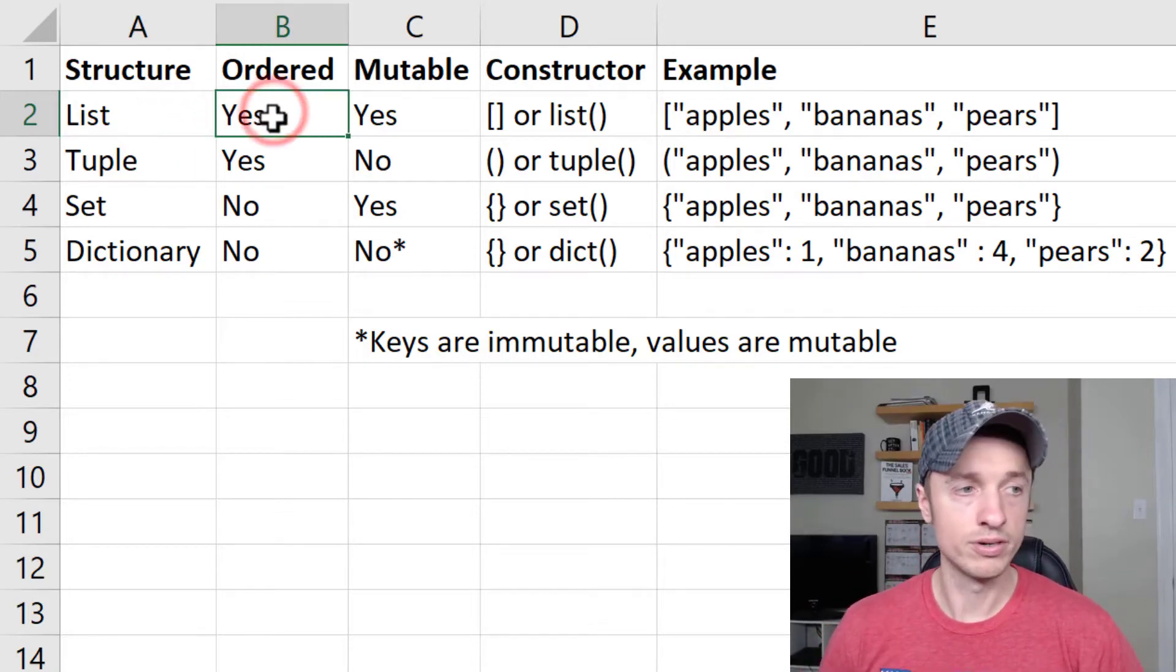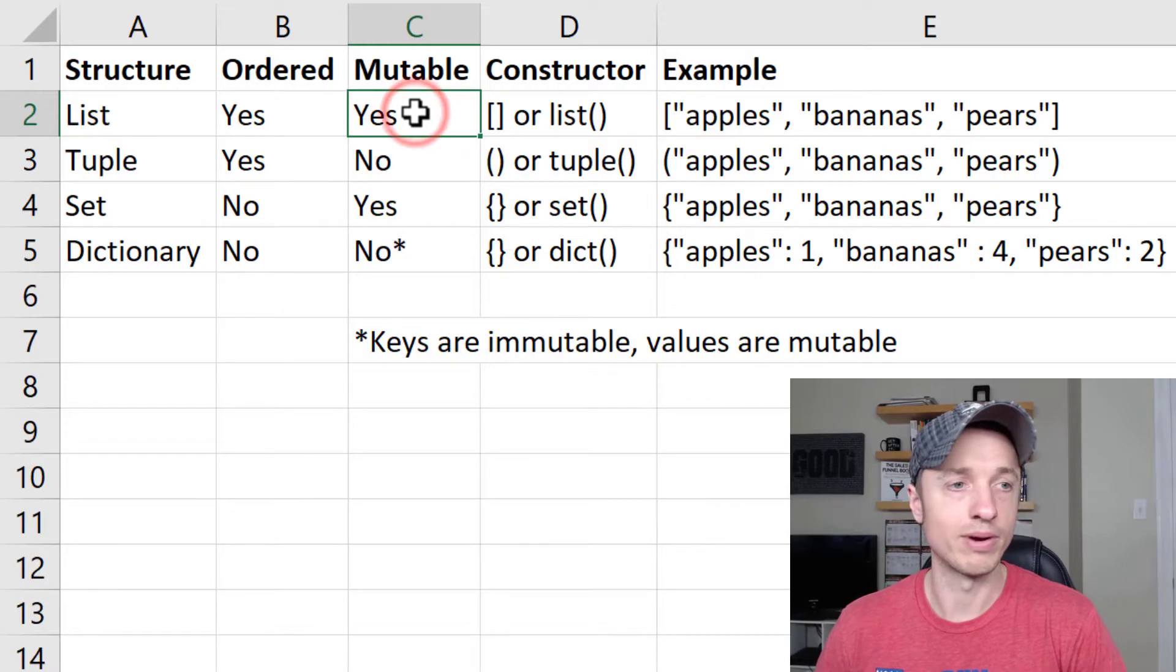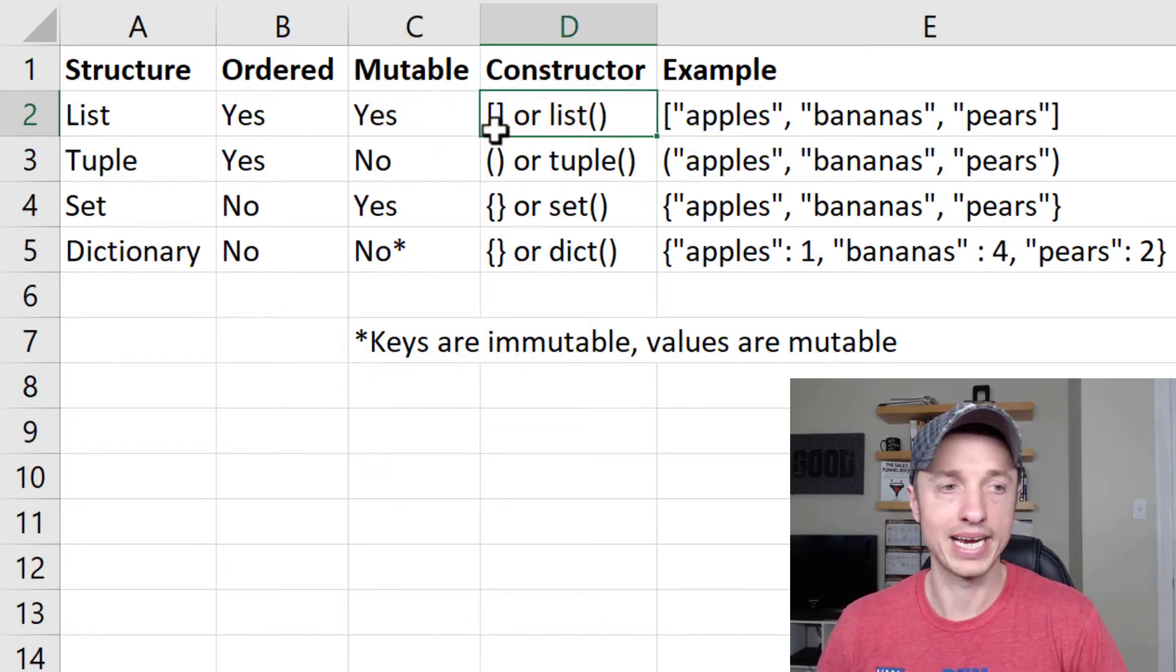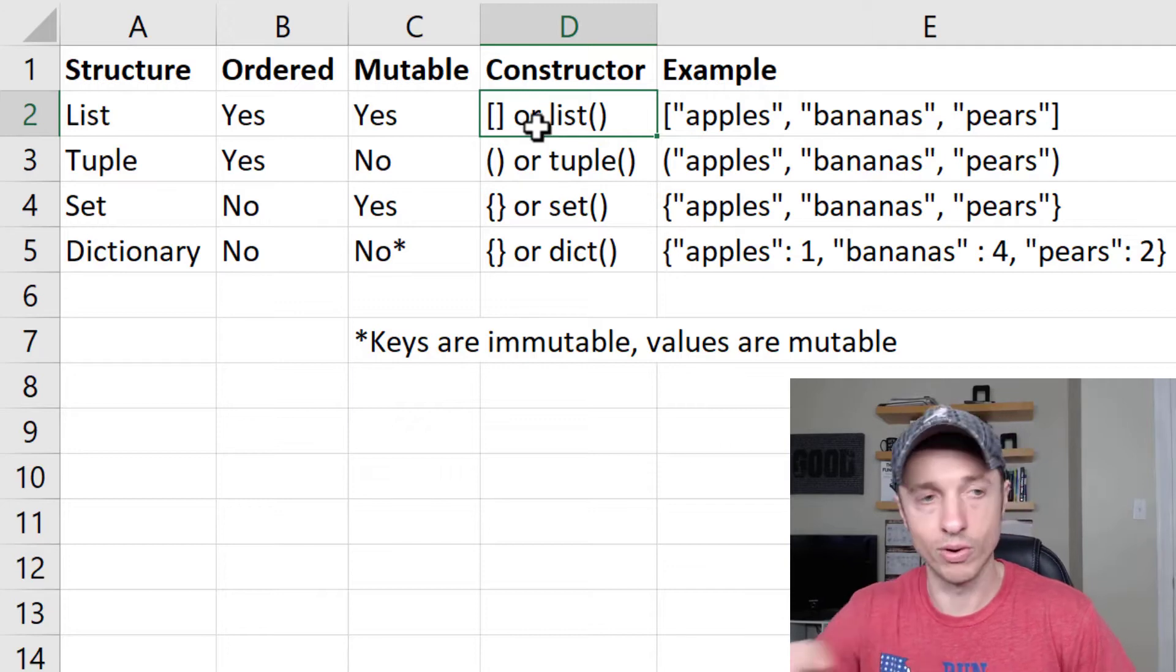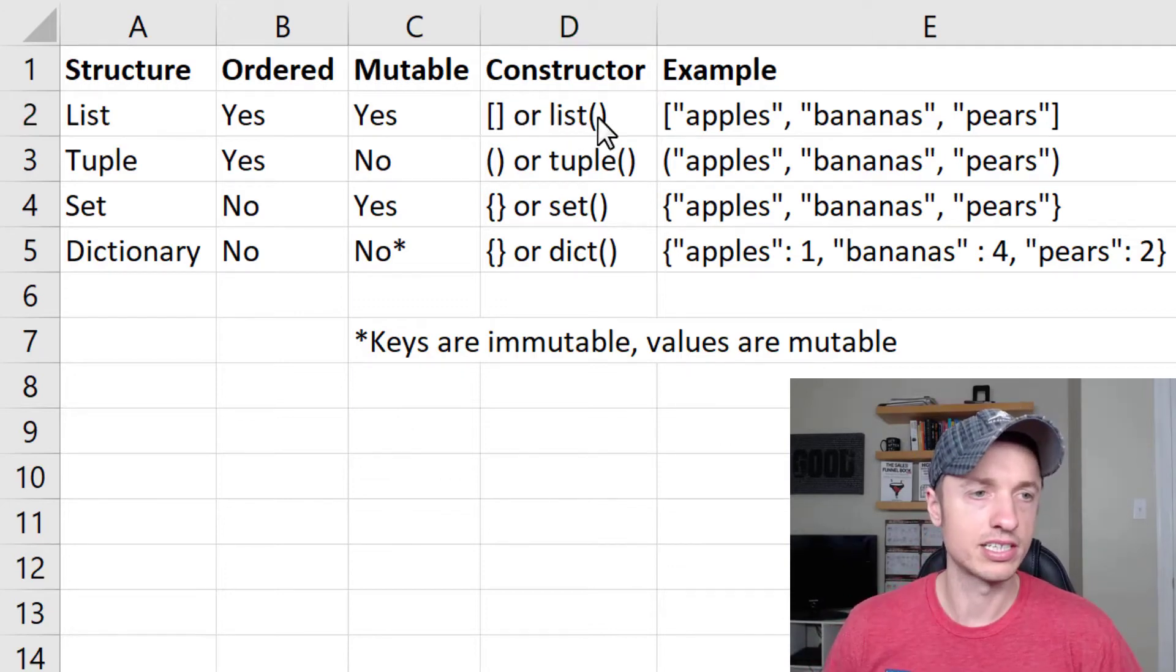So lists are ordered, so they're in an order. They're mutable, so we can change them. And then how we construct lists are with brackets like this, those square brackets, or you can use the list constructor. Basically a list would be the brackets and then the list of items in that list: apples, bananas, pears. And they're in an order.